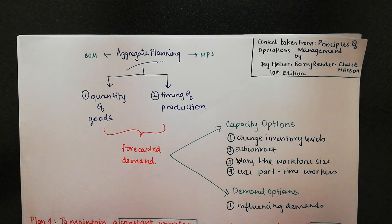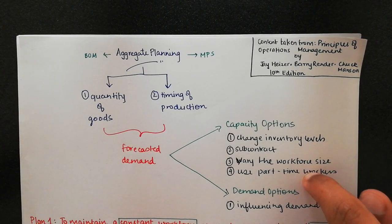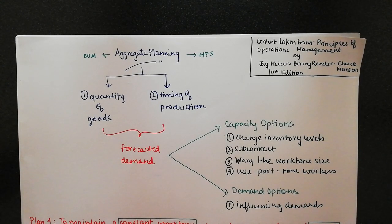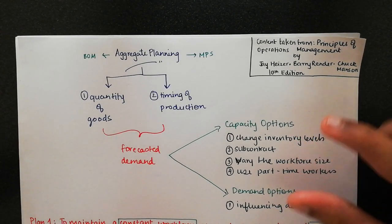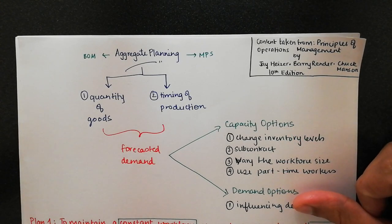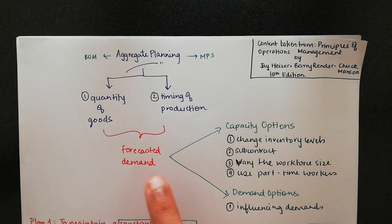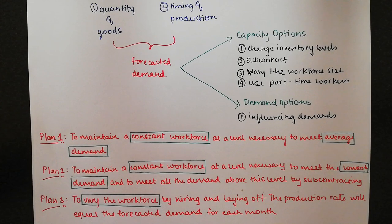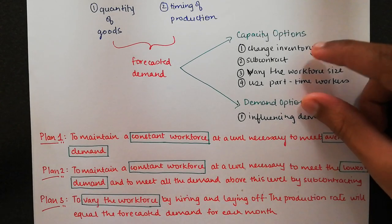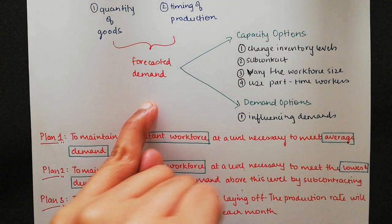So we have three main plans. Why do we have those three main plans? We have capacity options and demand options, and there are many different plans. People found that if you combine these two options — capacity options and demand options — you get better results for your forecasted demand. You can get your responsibilities done in a much more efficient manner. These plans are a combination of capacity and demand so that you can meet the forecasted demand accurately.